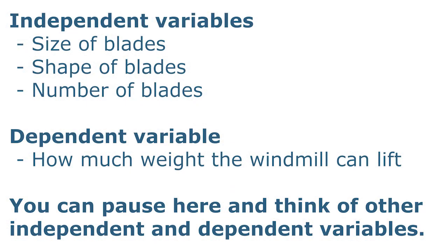During this activity, which is suitable for people of all ages, participants will not only learn about wind energy, but also independent and dependent variables. In this example, an independent variable might be the size, shape, or number of blades on the windmill. The dependent variable will be how much weight the windmill can lift, because it depends upon the changes you made to the windmill.